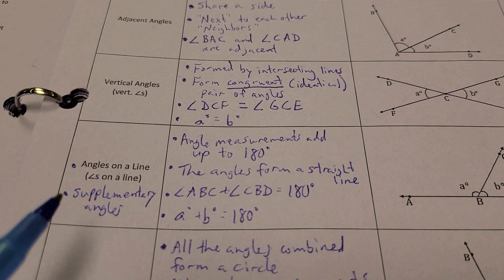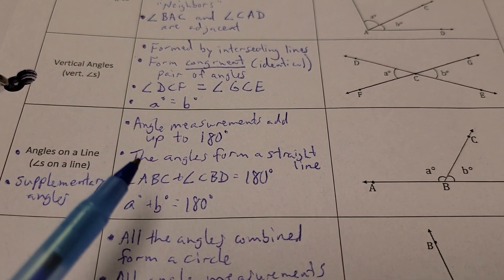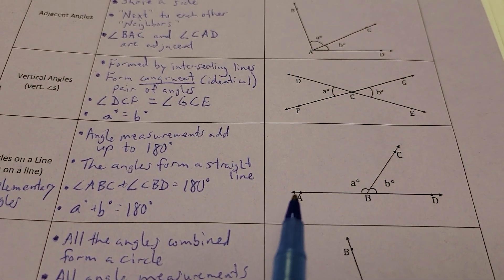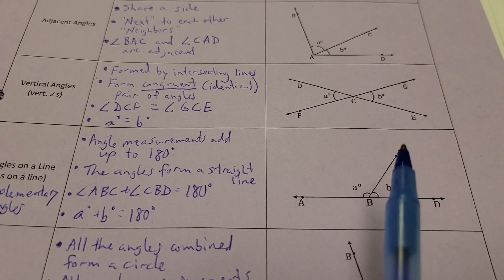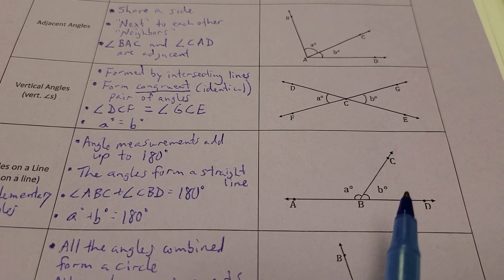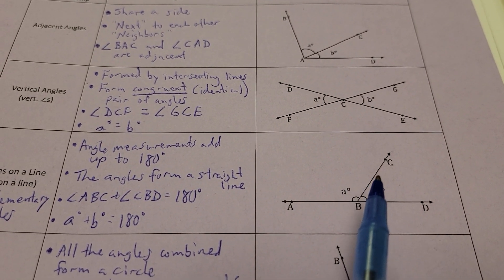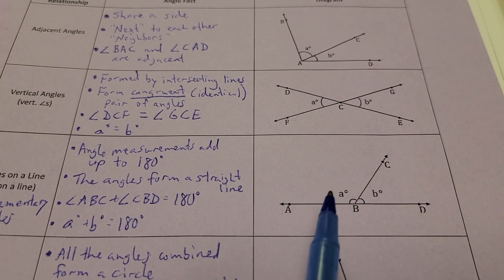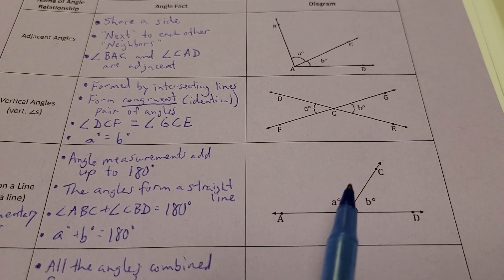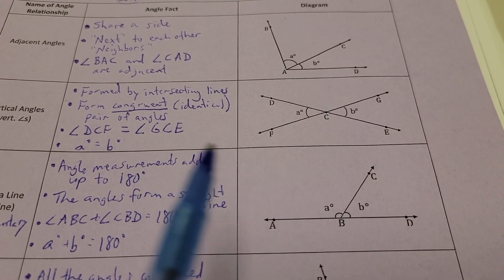Now, angles on a line, also known as supplementary angles. These are angle measurements that add up to 180 degrees. The angles form a straight line. If I see angle ABC and angle CBD, these two angles together add up to be a straight line. If this measurement of angle A is obtuse, this measurement of angle B is acute, together they have to add up to 180 degrees. For example, angle A could be 120. Well, then angle B has to be 60, because 120 plus 60 gives you 180 degrees.